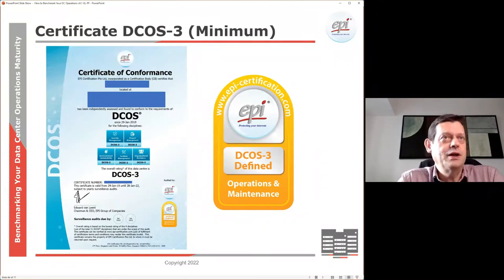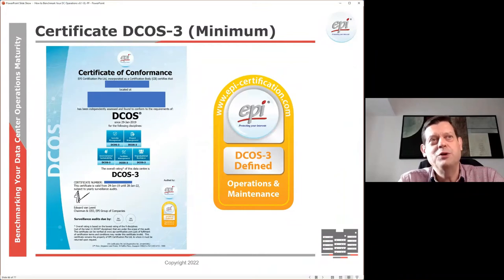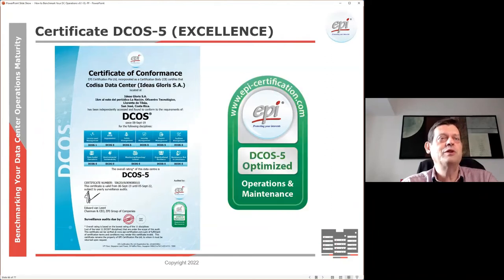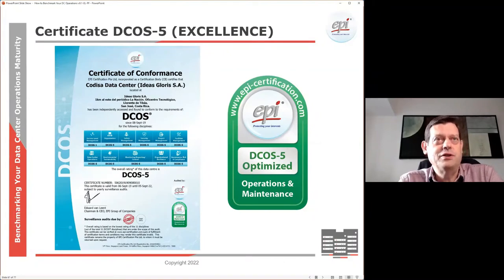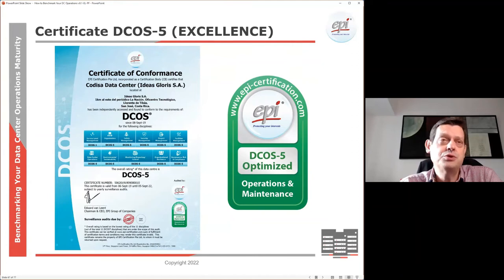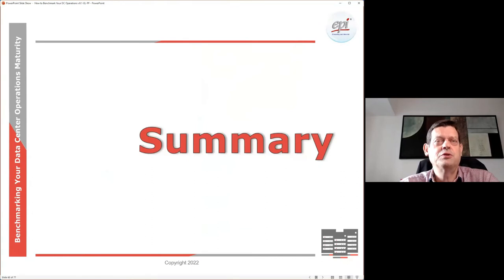As a result, they received a certificate on the wall to show they had achieved it — and the staff were really happy about that. One comment was that with ISO, they sometimes lost the will to live because there were too many things to fix in too short a period. DCOS allowed them to progressively, over time, make it better. One organization — Codista Data Center — was the first to achieve level five: all 11 domains fully implemented with operational procedures, an improvement cycle, and full integration across all 11 disciplines. They used a combination of manual resources and automation.